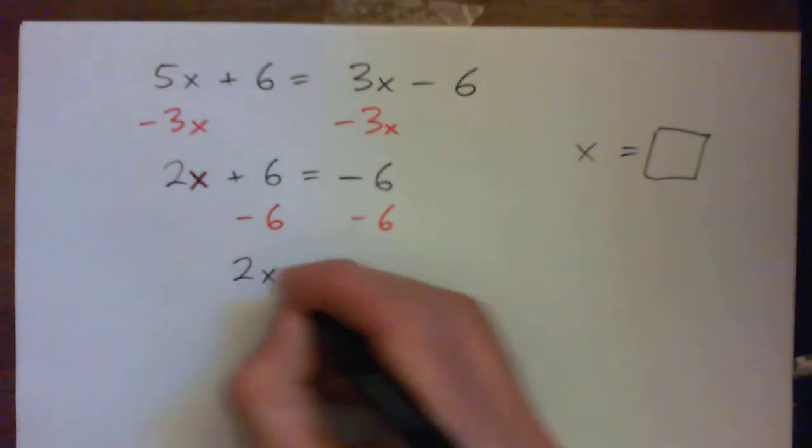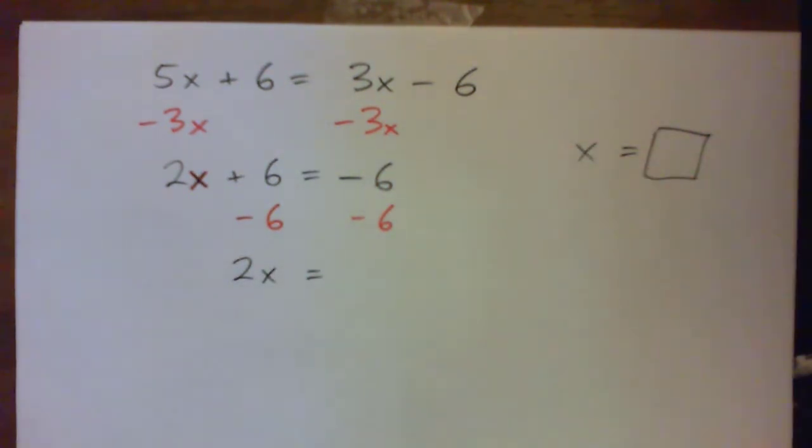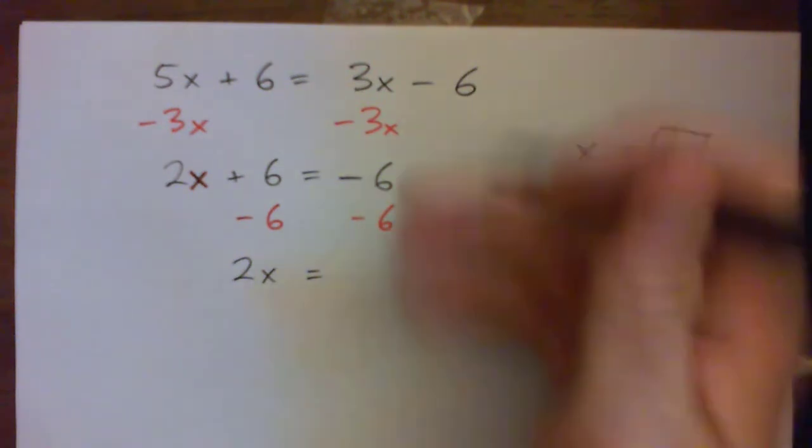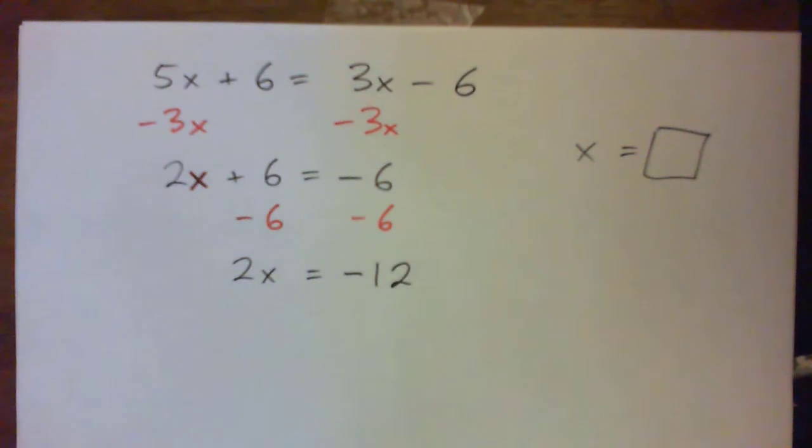And now we get 2x equals, now this is negative 6 and another negative 6. 6 bad guys and then 6 more bad guys. That's 12 bad guys. I'm in debt by $6. I spent $6 more, now in debt by 12. Right?